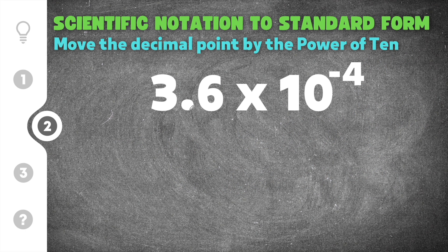Jumping down to our second example problem, this gives us 3.6 times 10 to the negative fourth. We need to convert this from scientific notation to standard form. The exponent on our power of 10 is negative 4, which means the decimal point will move 4 times to the left.